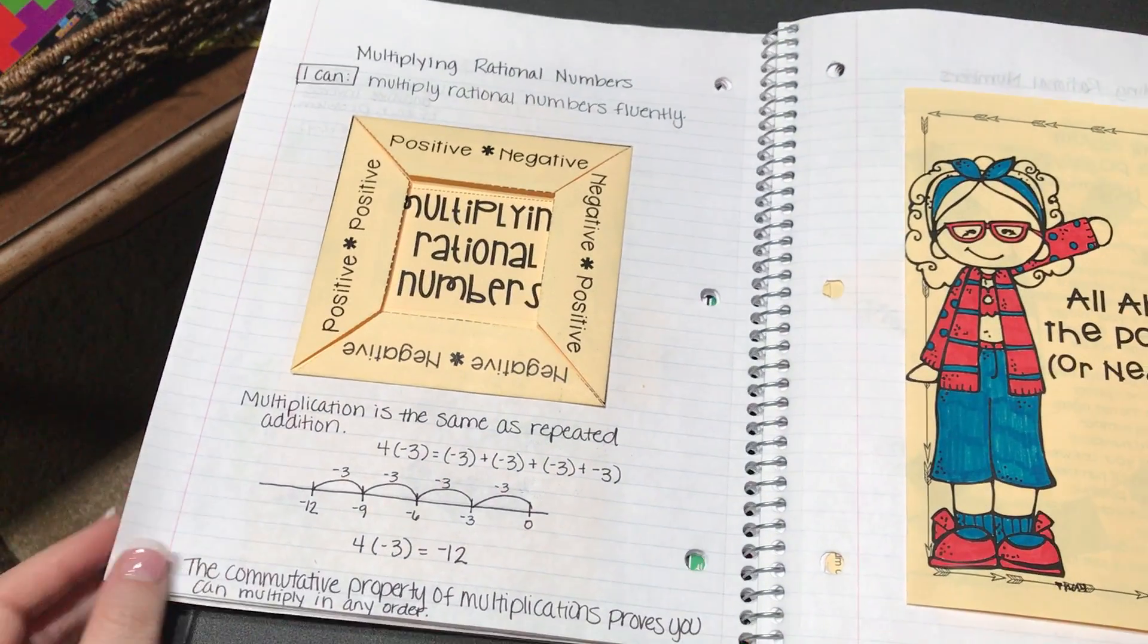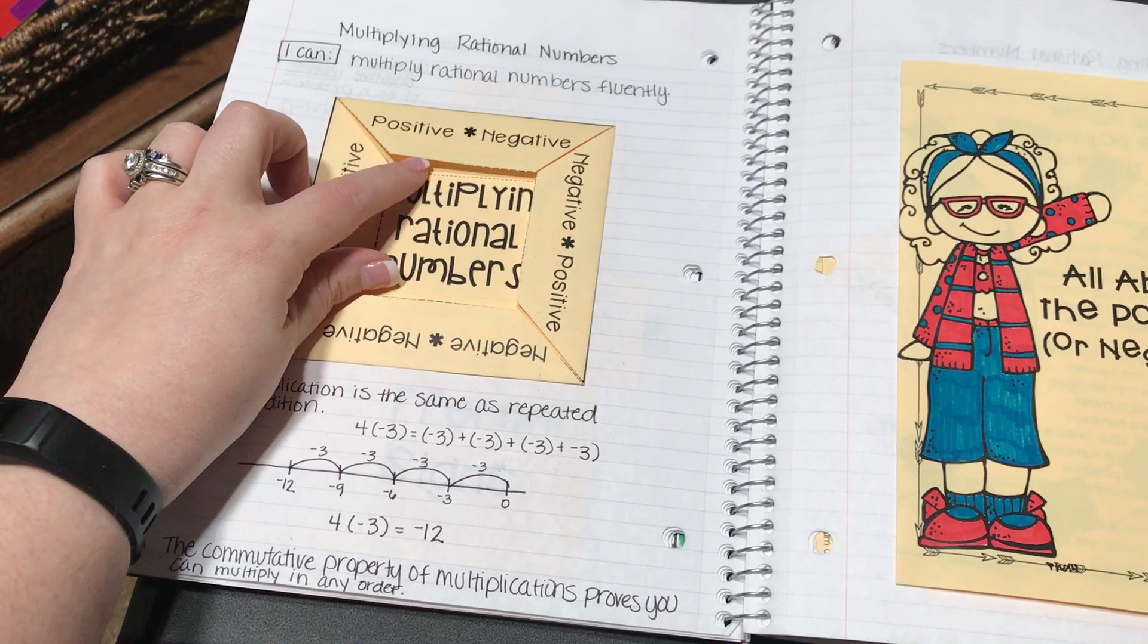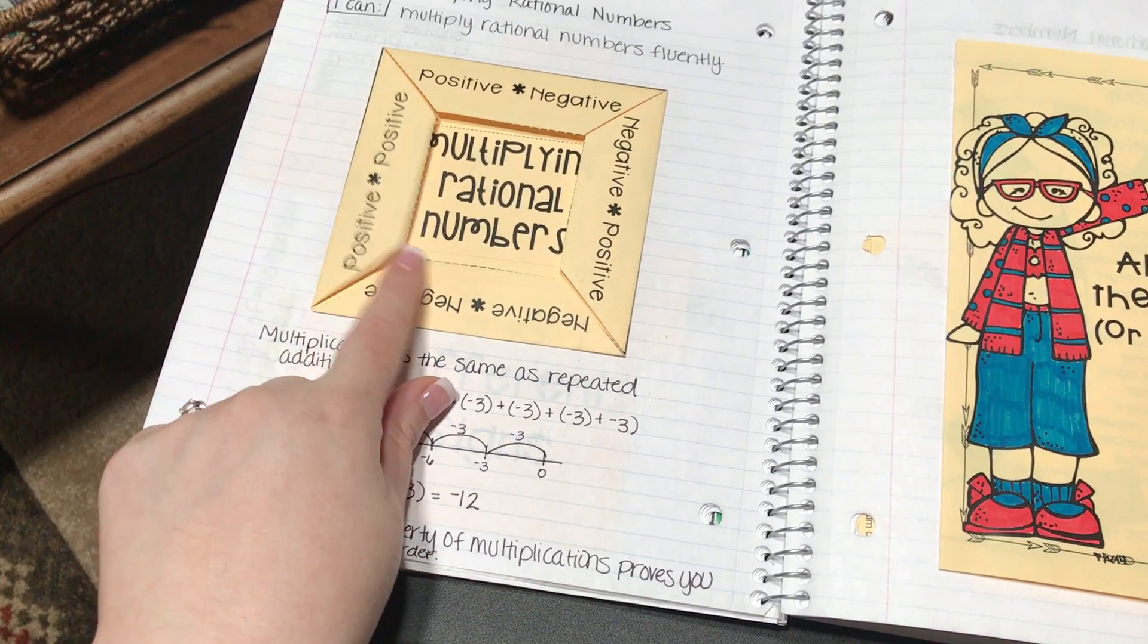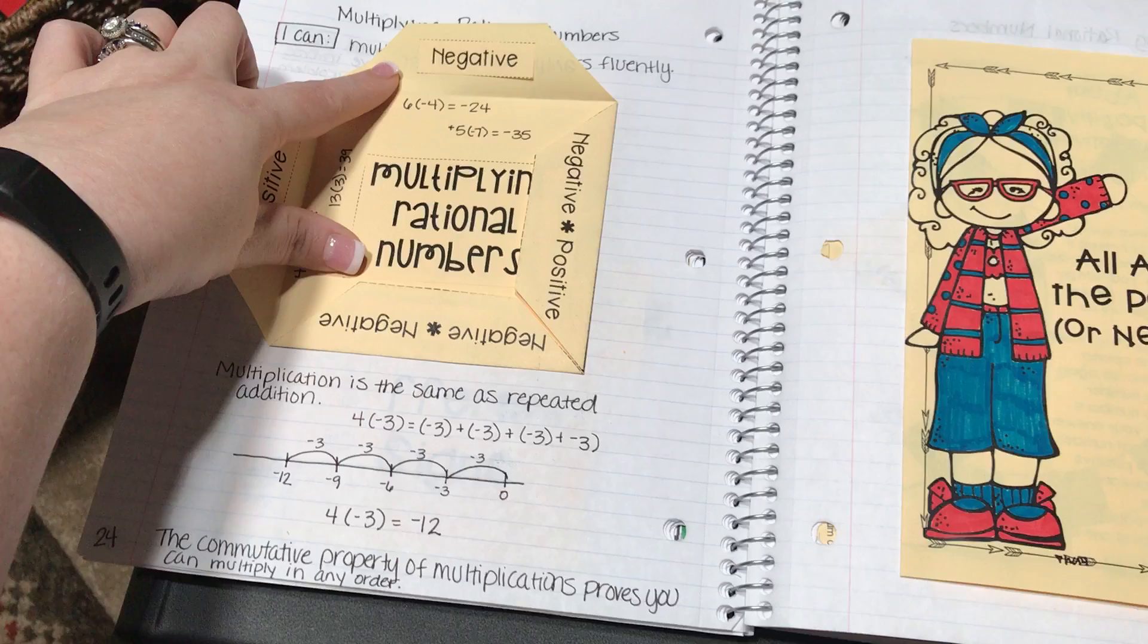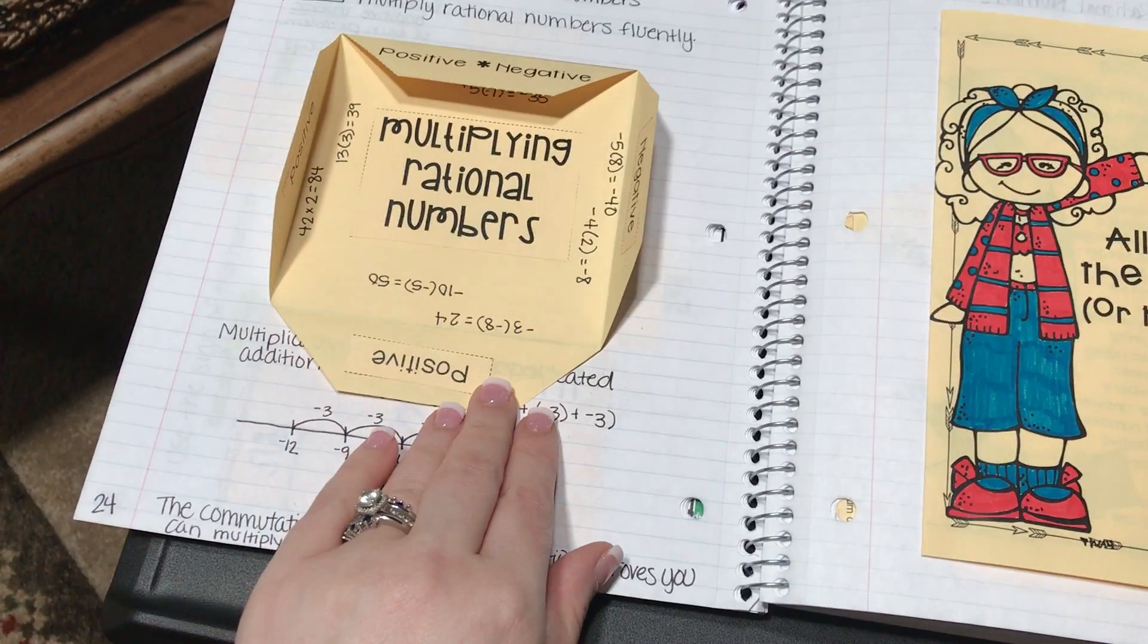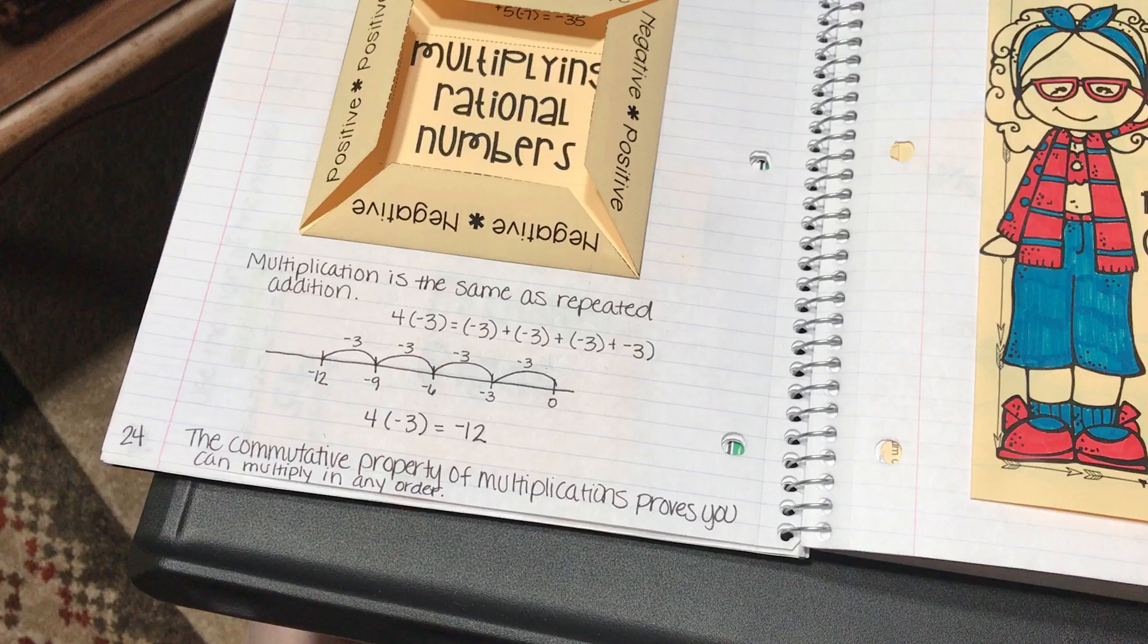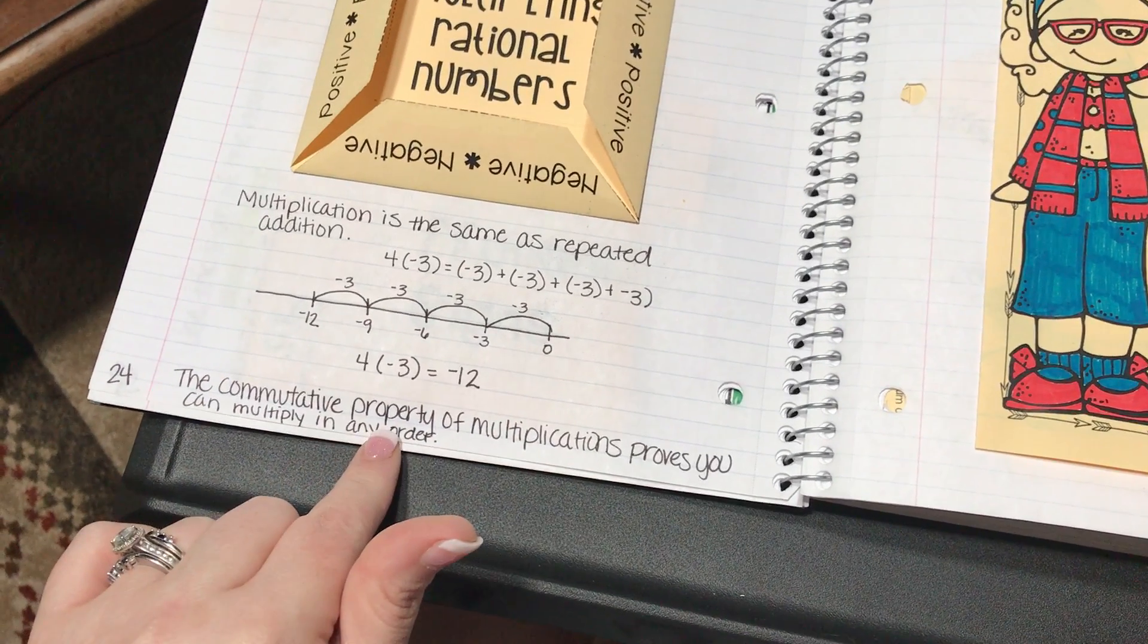The next one is multiplying rational numbers. Underneath this window flippable, students will glue in: a positive times a positive is a positive and create two examples, a positive times a negative is negative, a negative times a positive is negative, and a negative times a negative is positive. Then they talk about how multiplication is the same as repeated addition and how they can show on a number line, and just a review of what the commutative property is.